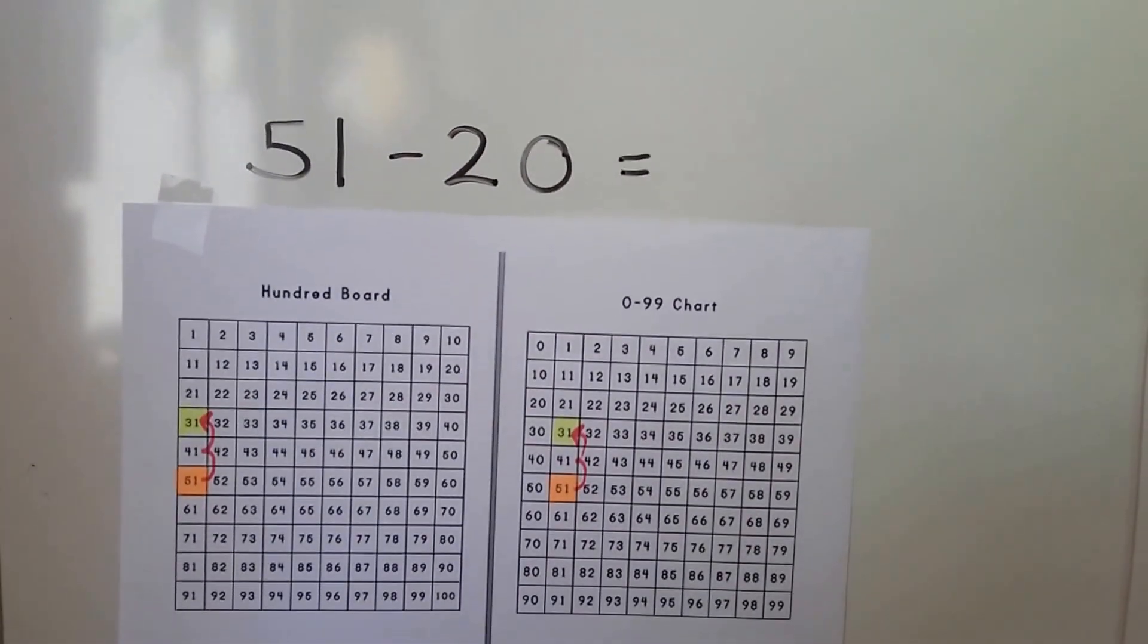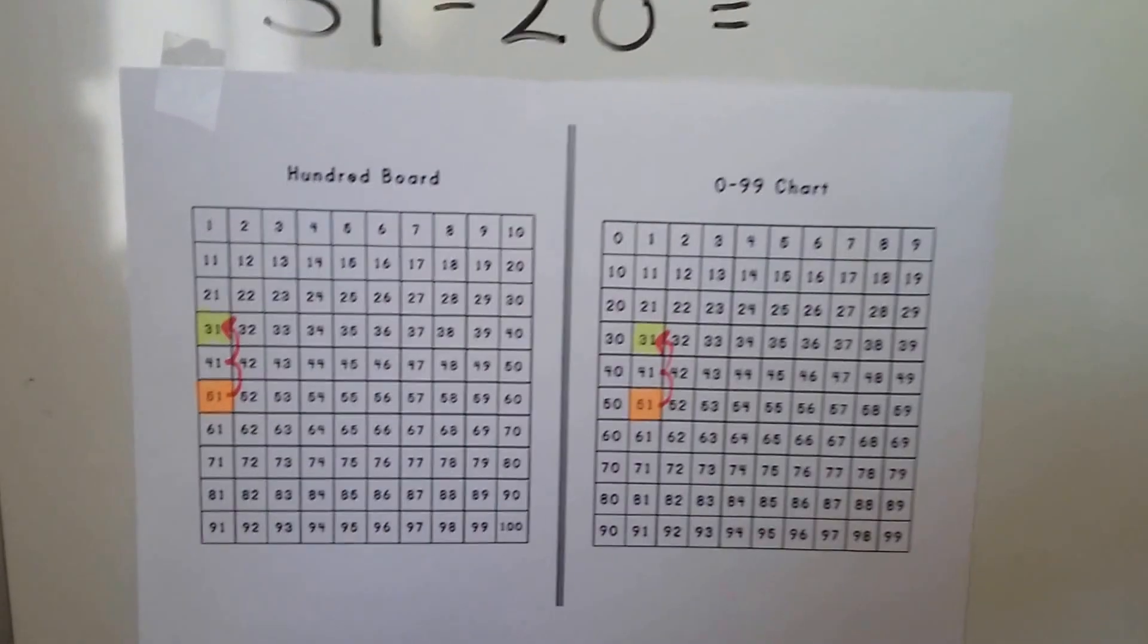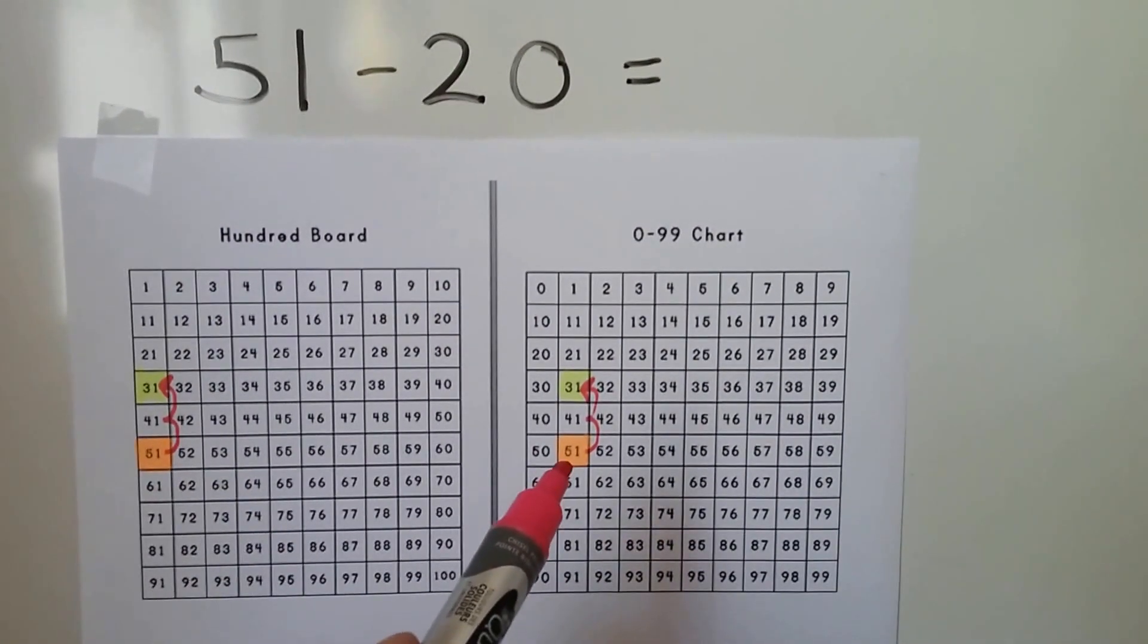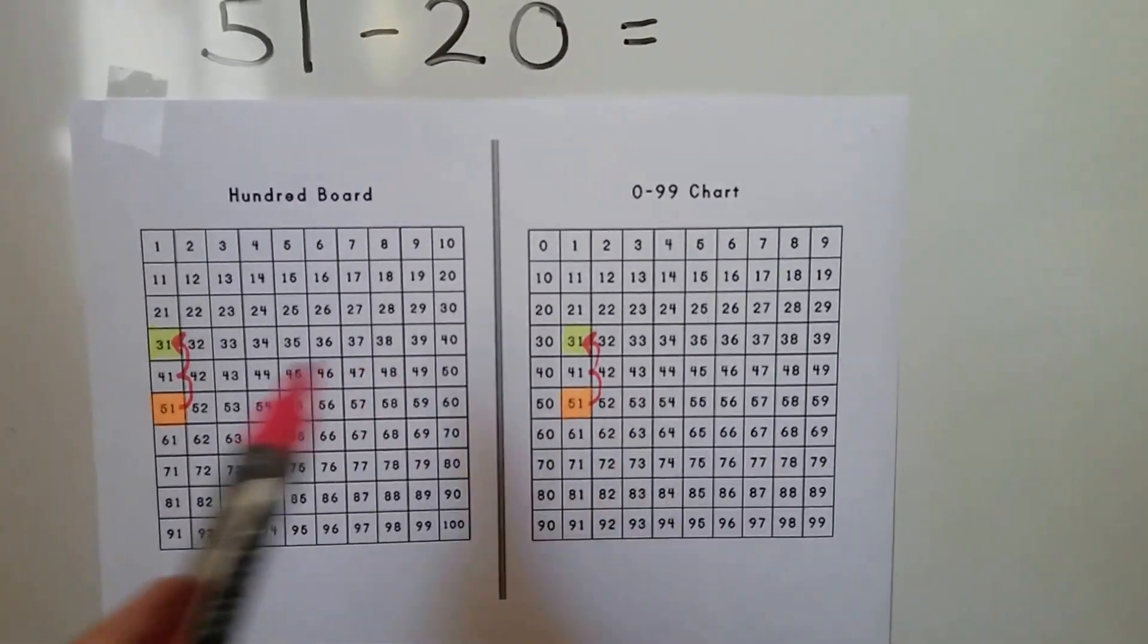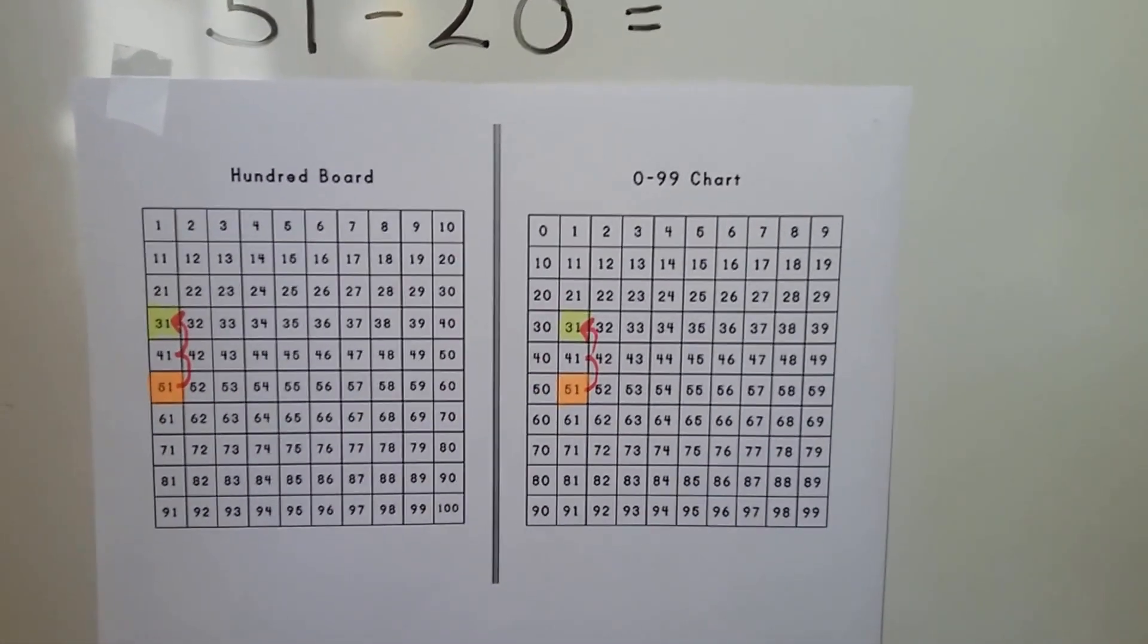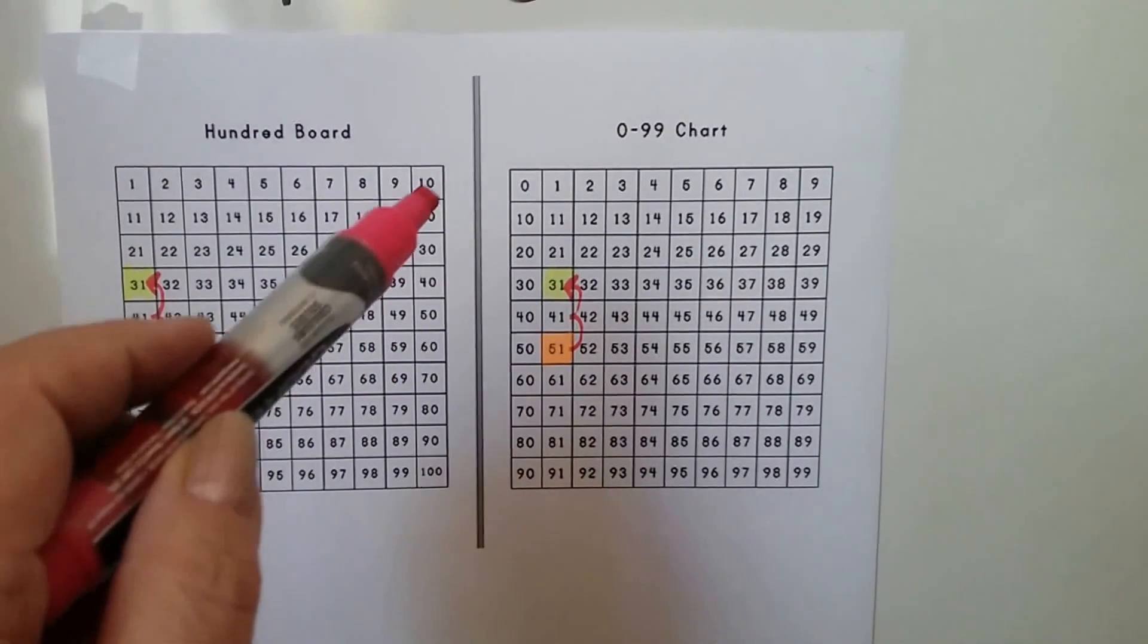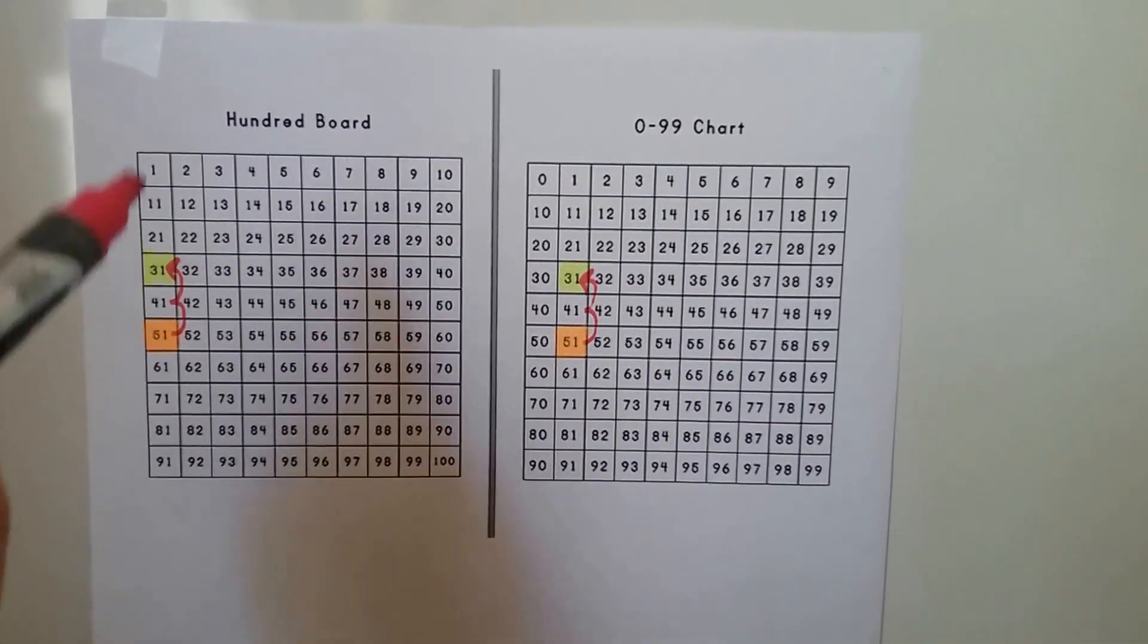If we want to find 51 minus 20, on a hundred board, the 51 is going to be over here. On a chart from 0 to 99, the 51 is going to be here. See the difference? Depending on which one you're going to use, it'll be in a little bit different place. It'll be moved over because the zeros are coming down here, and we have zeros in the ones place on this side. See? Because we started with a 1.